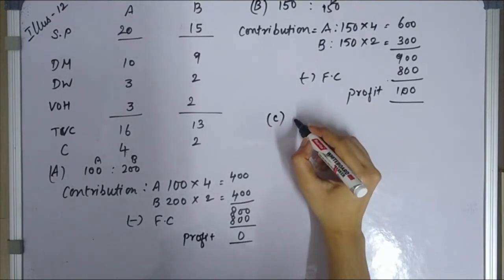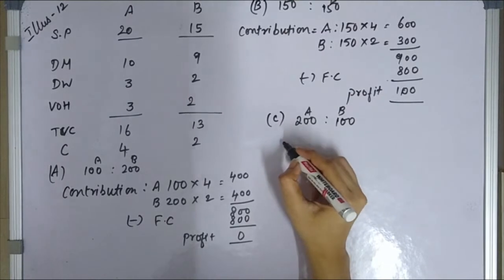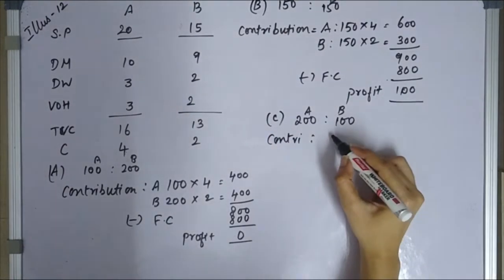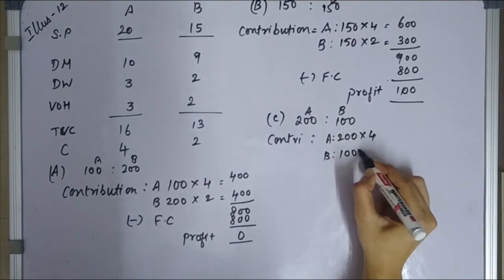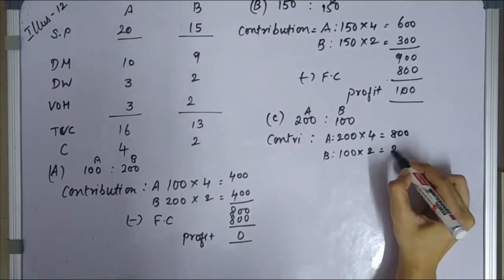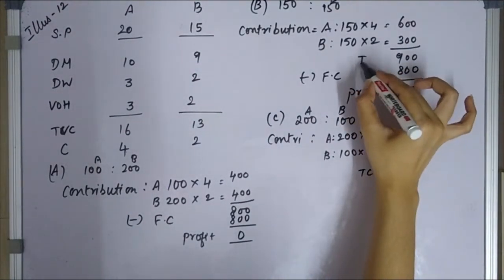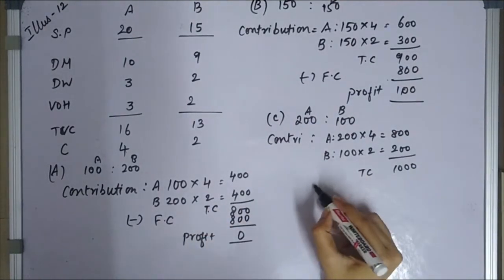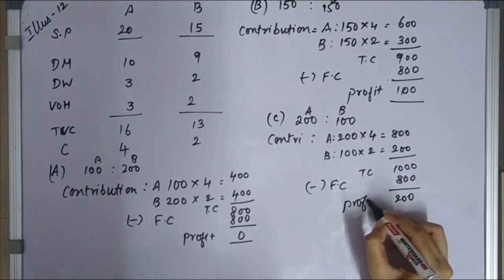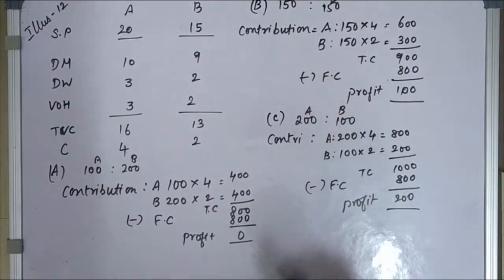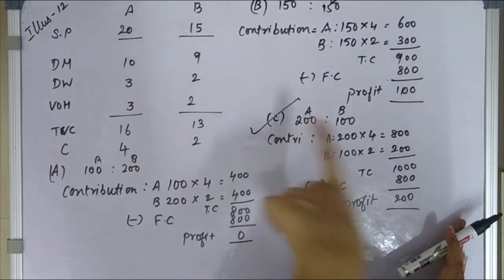Sales Mix C: 200 units of product A and 100 units of product B. Contribution from A equals 200 into 4 equals 800 rupees. Contribution from B equals 100 into 2 equals 200 rupees. Total contribution is 1000 rupees. Minus fixed cost of 800 rupees. Profit is 200 rupees. In the sales mix comparison, option C is the best option with the highest profit of 200 rupees.